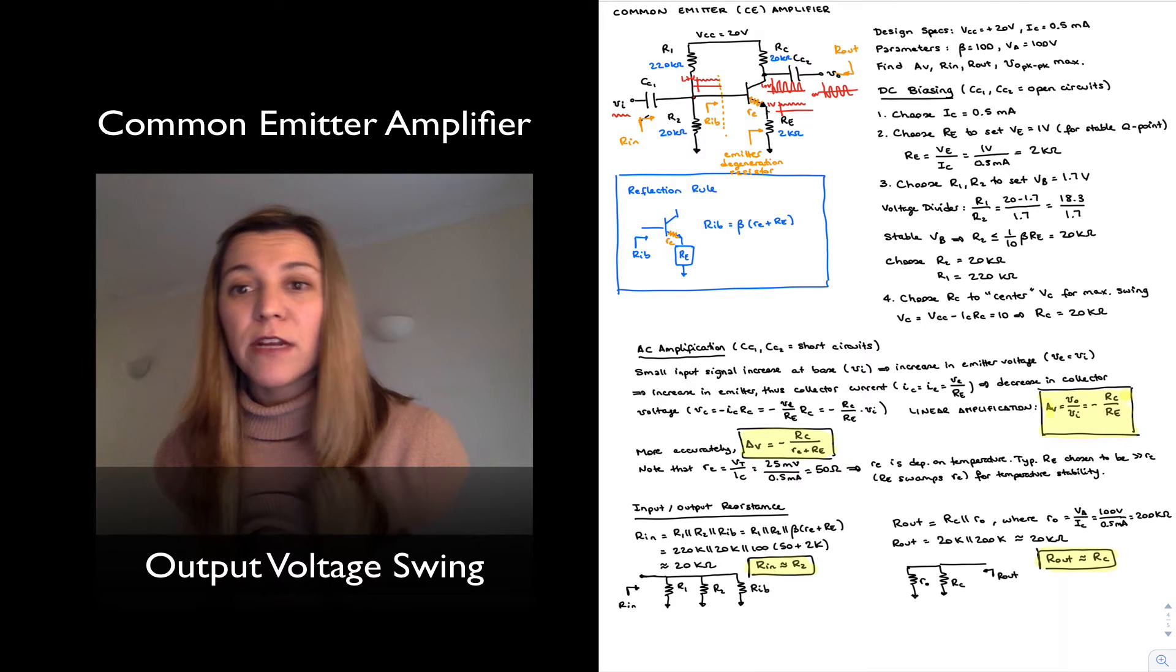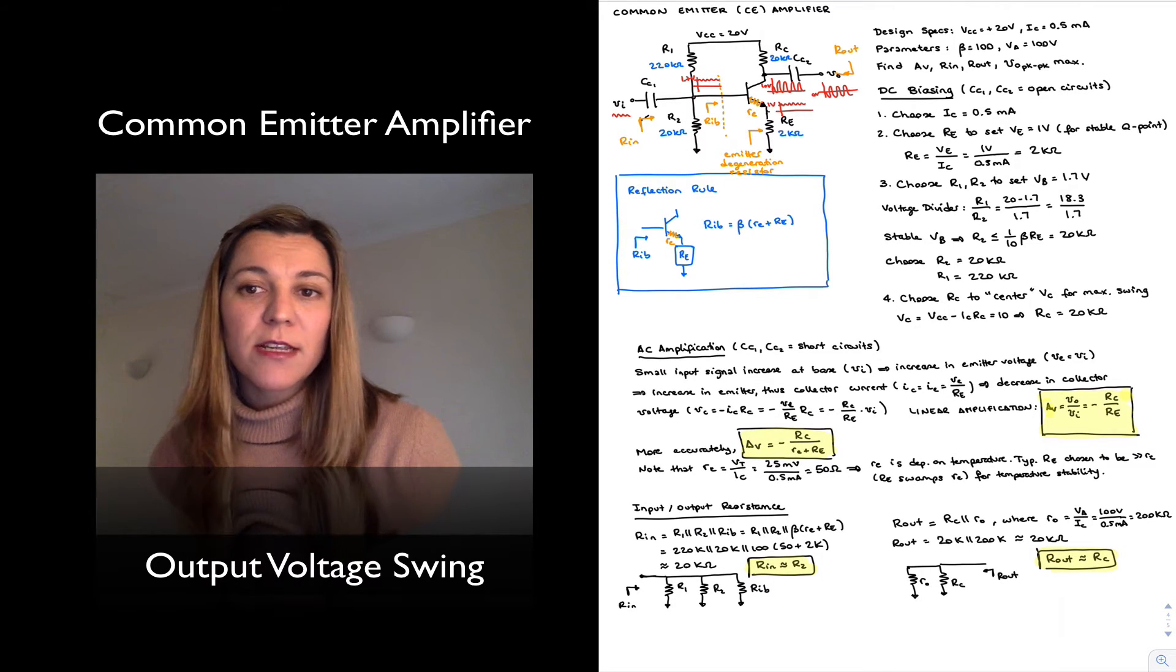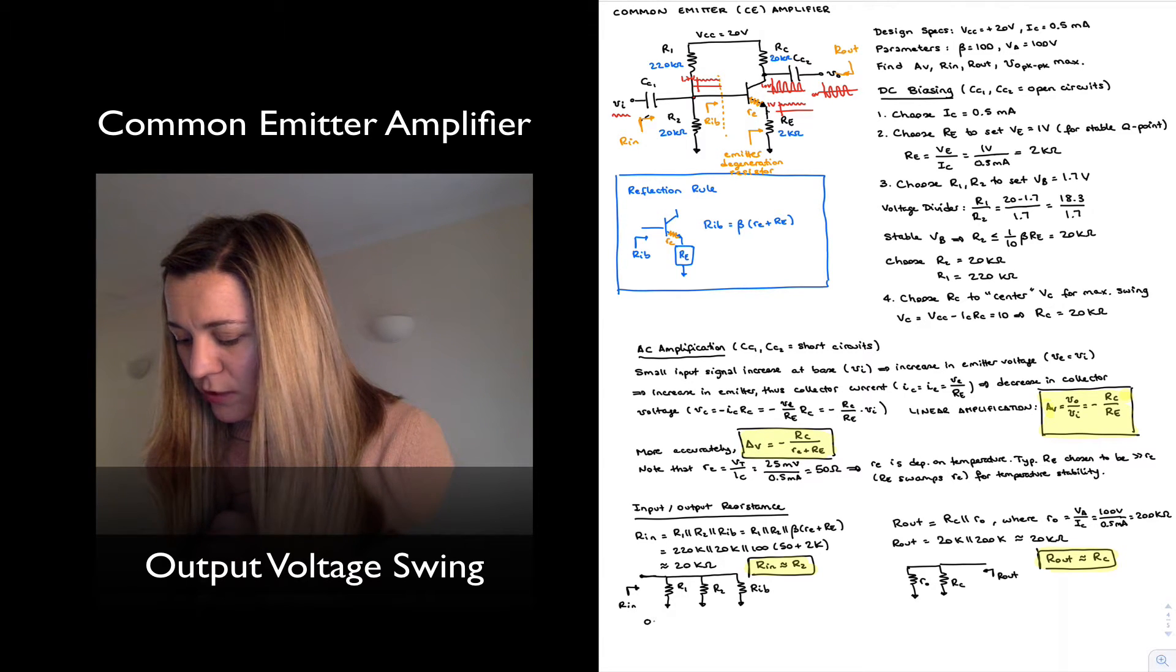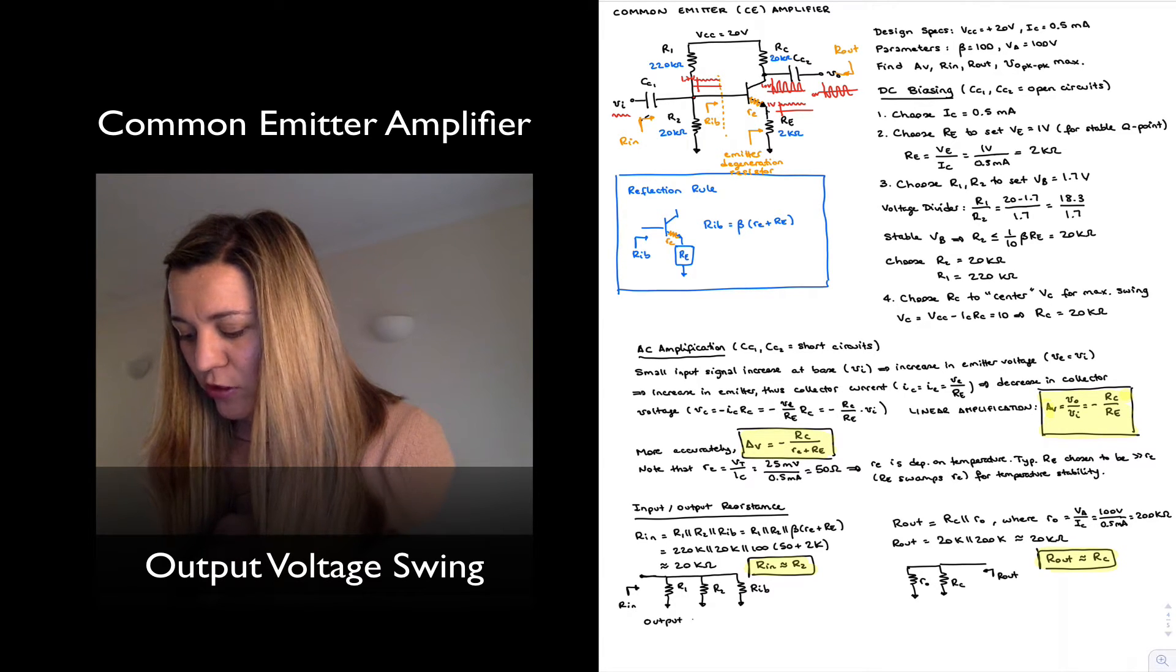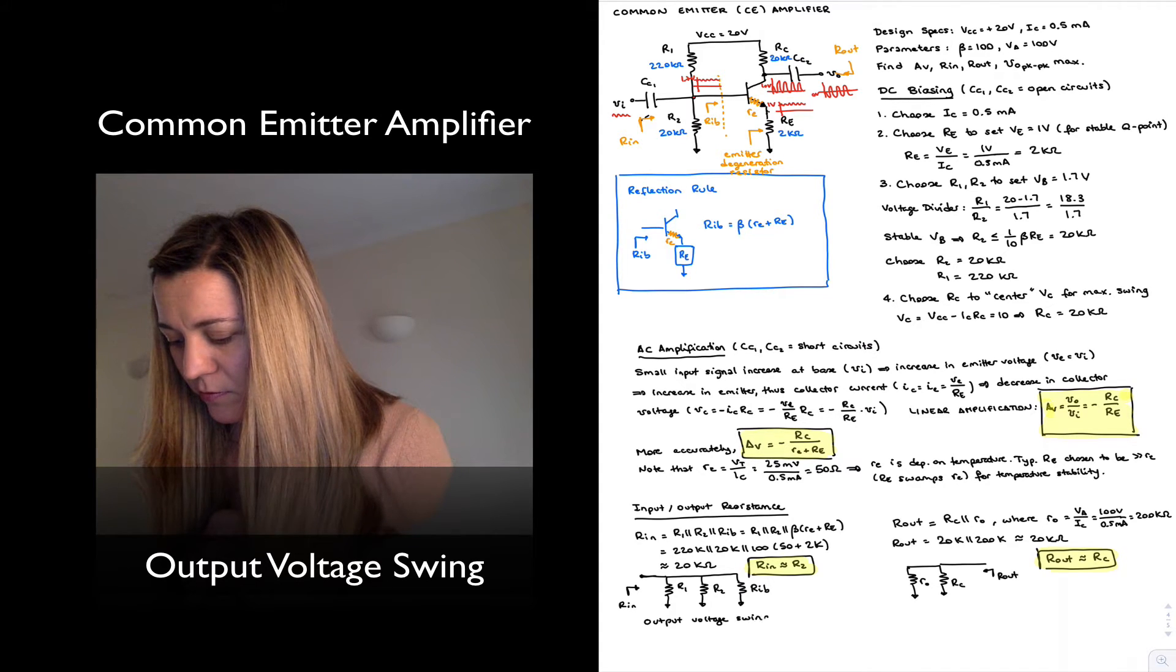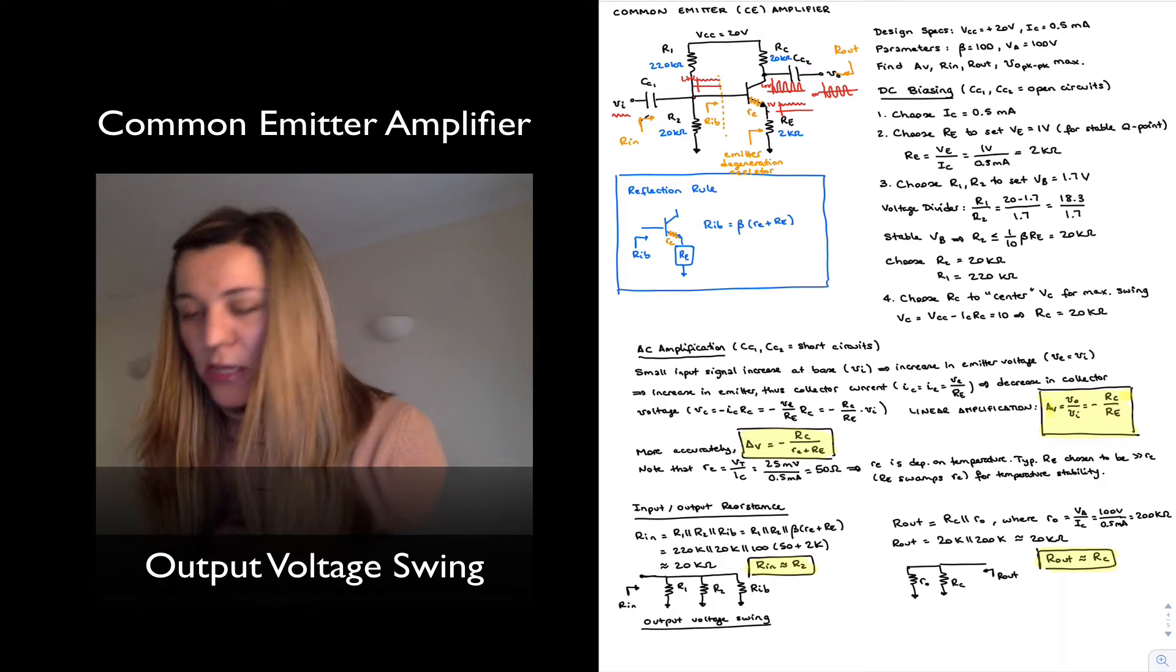If we run into cutoff or saturation, we're going to start seeing clipping effects in our output signal, which is an undesirable non-linear effect. So we typically want to calculate what is our maximum output voltage swing.